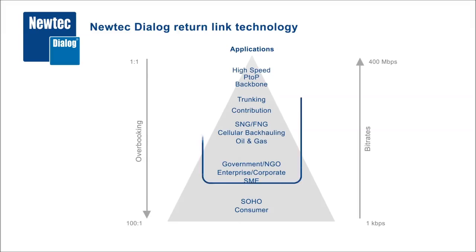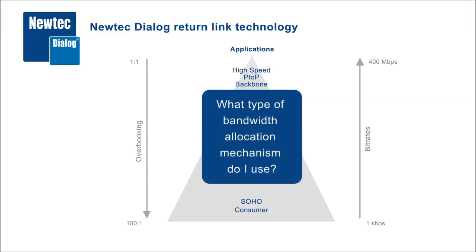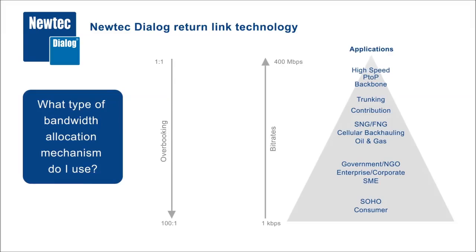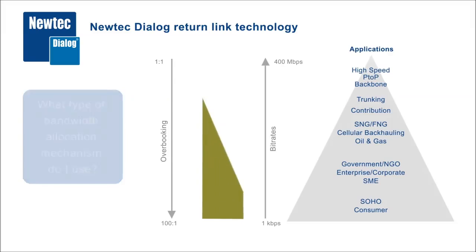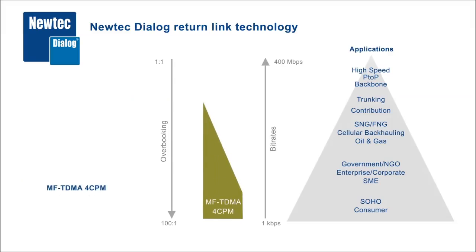So the question is, what type of bandwidth allocation mechanism do I best use? The first one, most known for the applications at the bottom of the pyramid with a high degree of overbooking and relatively low speed, is MFTDMA. It's ideally suited for bursty traffic, but it has low efficiency.